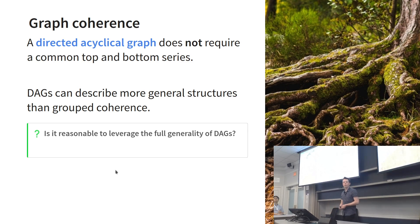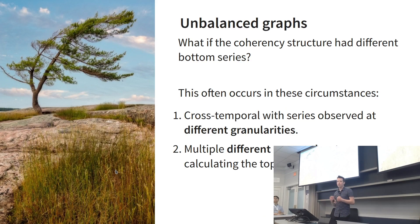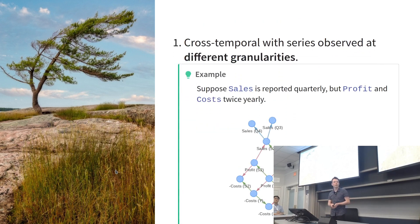Unbalanced graphs—this is when we change the bottom level time series to be a different disaggregation. This often comes up in a couple of places. In particular, I really like cross-temporal hierarchies where each series you might observe in the cross-section might be observed at different frequencies. The other one is that you might have completely different paths to get to the top level, so the bottom is going to be different there.